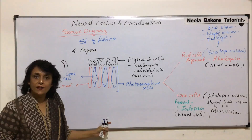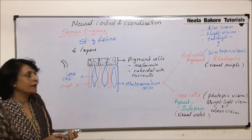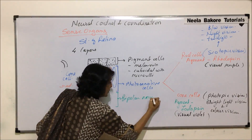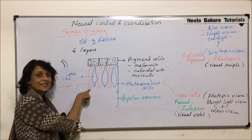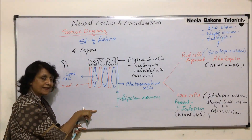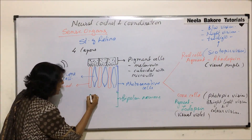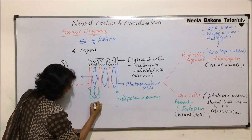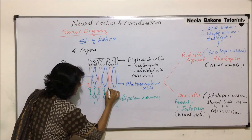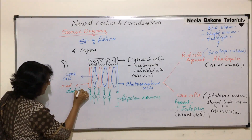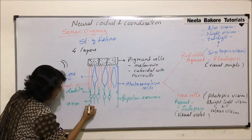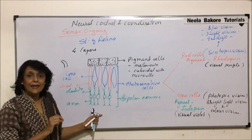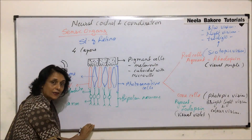The third layer is of bipolar neurons. These neurons are going to make synapses with the fibers arising from the photosensitive cells. If we draw these cells as a neuron, here are the dendrites and this is the axon. These are bipolar neurons — they make synapses with the photosensitive cells on one side.